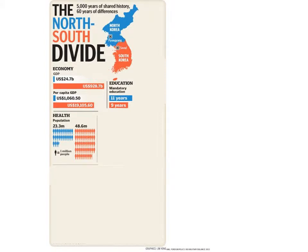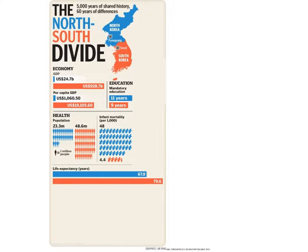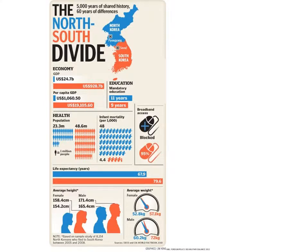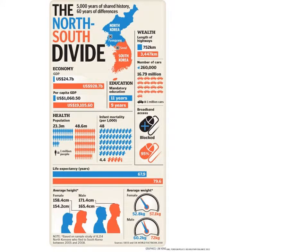Here's health measured by population. Infant mortality — the number of people who die as infants — compare North Korea to South Korea. Here's life expectancy, average height (which depends a lot on nutrition and good medicine), and average weight — those are closer. Broadband access: in the North, there is none — it's blocked. The length of highways: the South has much more. The number of cars: infinitely more in the South.